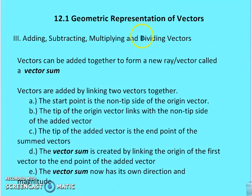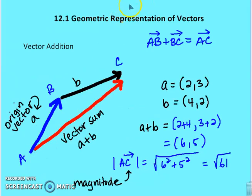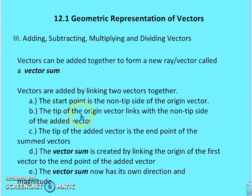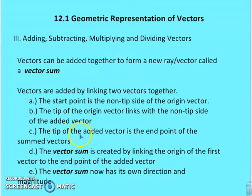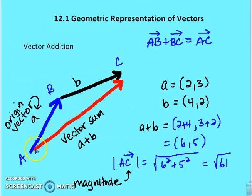Going back to our discussion about some of the definitions of addition. So the starting point is the non-tip side of the origin vector, which in this case was the blue vector. The tip of the origin vector links up with the non-tip side of the added vector, which is, in this case, the black vector, or B. The tip of the added vector is the endpoint of the summed vectors, which is the vector sum. And I'm going to create the vector sum by creating a link from the origin of the first vector to the endpoint of the added vector. And that vector sum is represented in red from A directly to C.